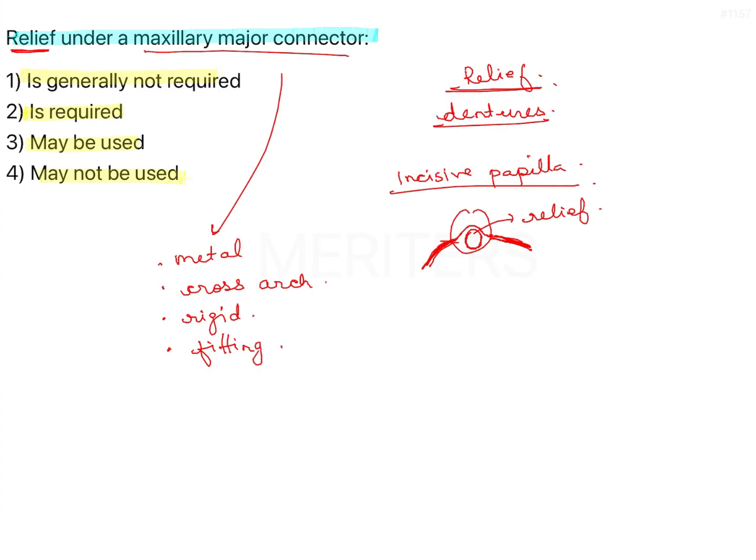In metal denture bases, it's important that the metal is in contact with the tissue. There could be a very thin layer of acrylic, but it is in intimate contact with the tissue. The palate has firm mucosa, the mucosa is good, the bone is good, and there is no mobile tissue. So in this case you do not need to provide any additional relief to that area.